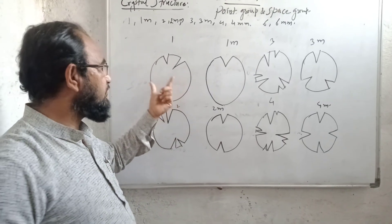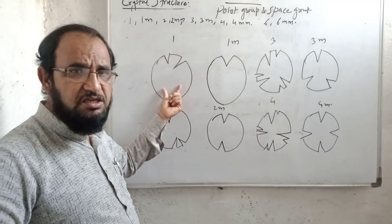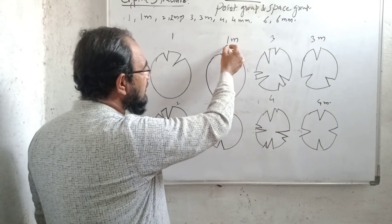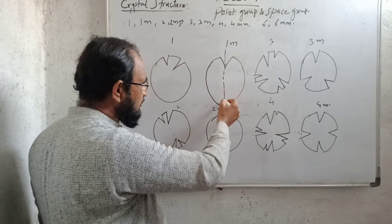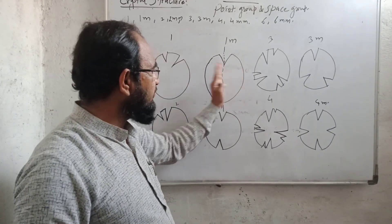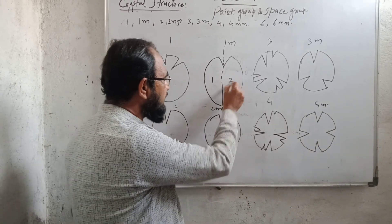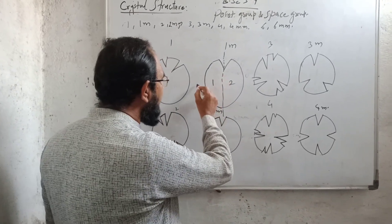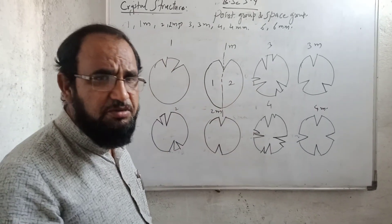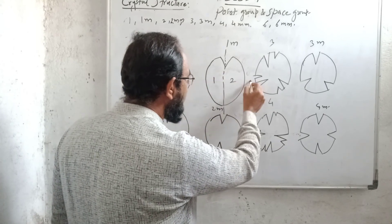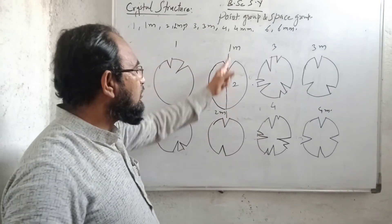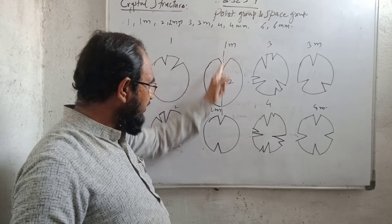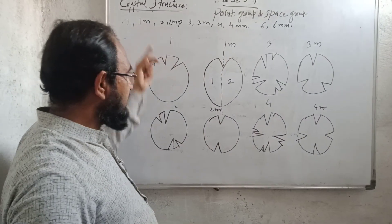Suppose we have this figure — in this one, translation is allowed. For 1M: if I draw the axis passing through this one, then there is exactly a reflection of the first part to the second part, meaning the first and second parts are exactly similar. But if I draw another transverse axis, there is no symmetry. So only perfect reflection is seen when one axis passes through the center. This is known as 1M.